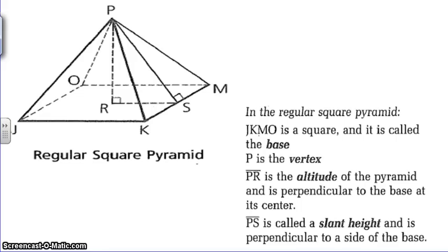The other type of solid is a regular square pyramid. It is named after its base here. So when they're referring to a regular square pyramid, the square is referring to the base, which in our case is JKMO. And P is the vertex. PR is the altitude of the pyramid, and it's perpendicular to the base at the center. In our case, R is the center.